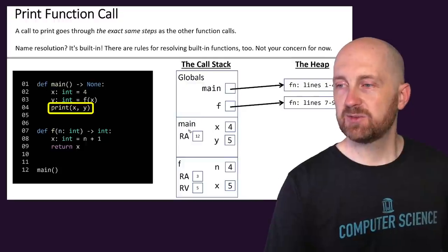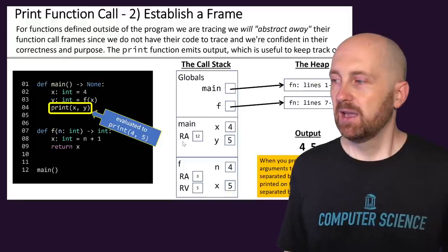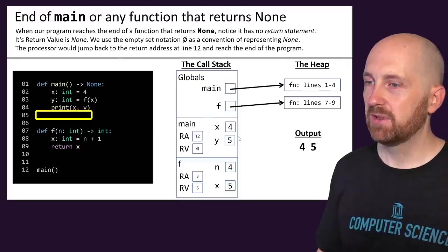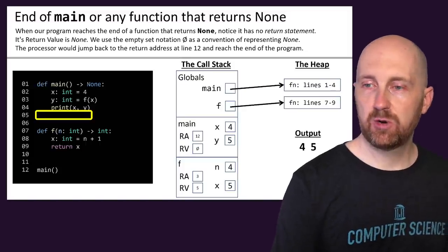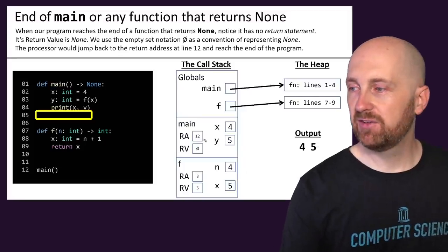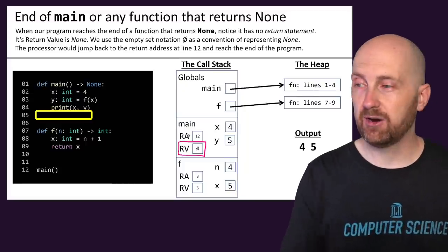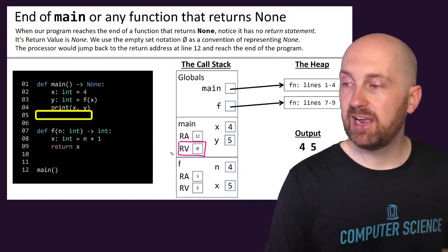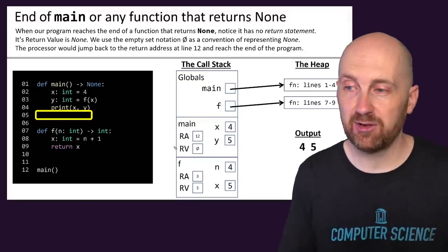There's something special that happens when we reach the end of a procedure — a function that returns none. Notice there's no return statement here. We have the convention that we add a return value entry using the null character (∅), which we think of as none or nothing. This indicates the function has reached its end and there's nothing else for it to do.